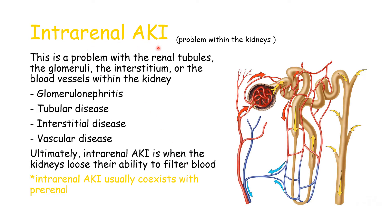Intra-renal AKI is a problem within the kidneys — involving the renal tubules, glomeruli, interstitium, or blood vessels. With the glomerulus, there is inflammation such as glomerulonephritis. With the renal tubules, we will talk about acute tubular necrosis. The interstitium is essentially the space between everything, and if there is a problem there, it will also affect the kidneys.